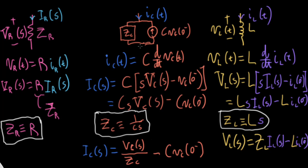People often, instead of writing a generic impedance block, will go ahead and write a capacitor symbol with the impedance 1 over CS written next to it. Let me rewrite the impedance explicitly as 1 over CS to make it clear. So that's our Laplace domain model for a capacitor that includes an initial condition.